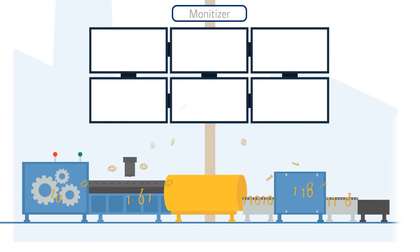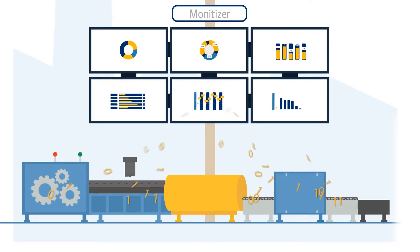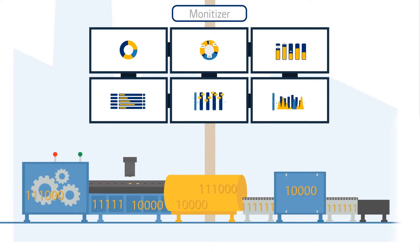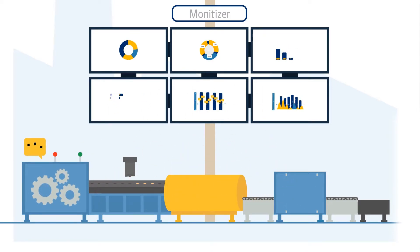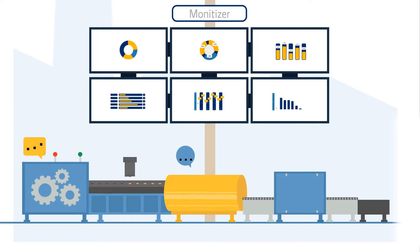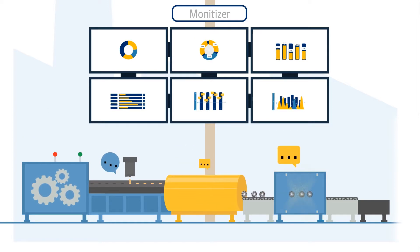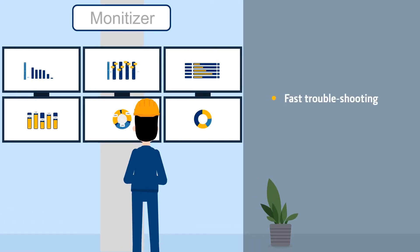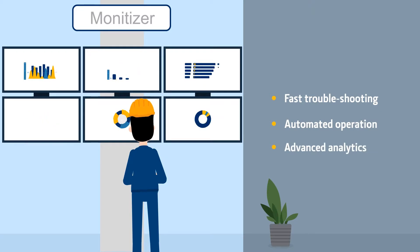Manitizer is Norican's digital tool for collecting and analysing your foundry data. It helps turn your data into value. Manitizer lets your machines talk to each other, synchronising them perfectly for stable, faster and higher quality casting production. Manitizer's real-time information supports fast troubleshooting, automated operations and advanced analytics.